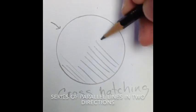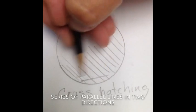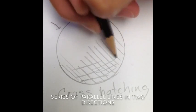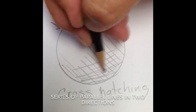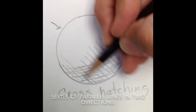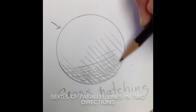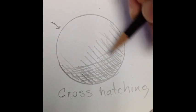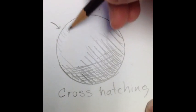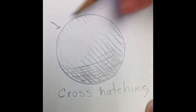With cross-hatching, you're going to cross or go in a different direction to create the shadowing. The more lines you do, the darker the area will look. The fewer lines, the lighter it will look.